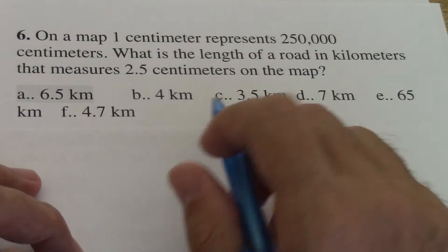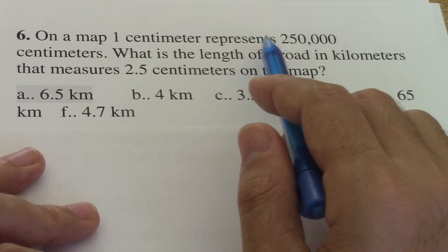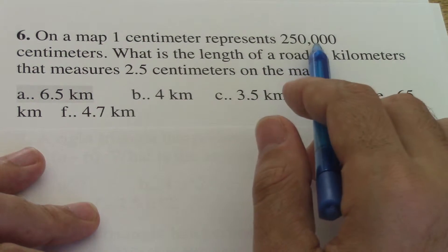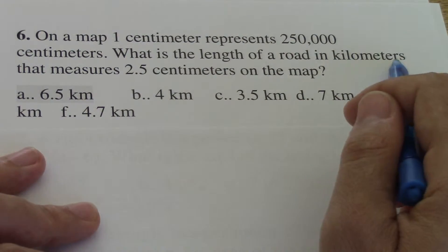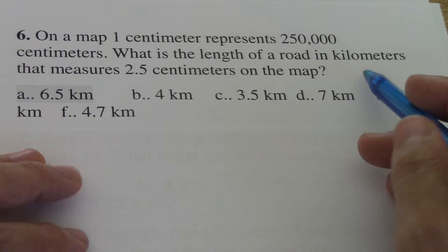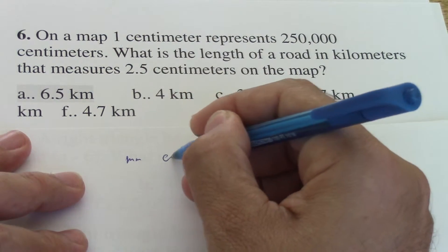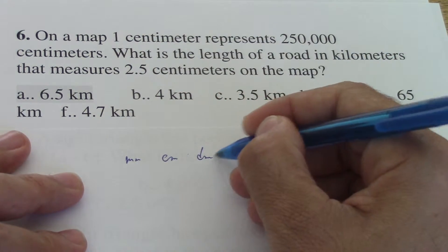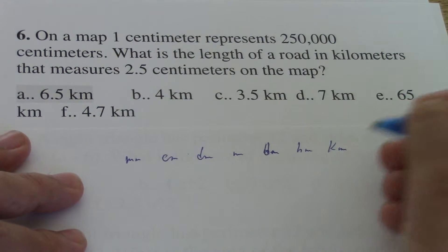So what we do here basically is multiplying the centimeters on the map times the centimeters on the real scale, and then we divide it by 100,000 to get kilometers. From centimeters to kilometers is 100,000 because we have millimeters, then centimeters, decimeters, we have meters, decameters, hectometers, and kilometers.